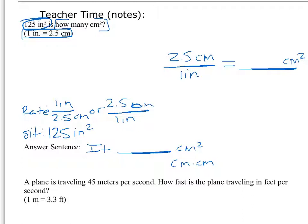I have centimeters from that rate, but I need centimeters squared. Is centimeters the same thing as centimeters squared? No — it's the same as centimeters times centimeters. So what do we need to do to make sure we have centimeters times centimeters? We multiply by itself — we put that rate in one more time. Now we can see that we have centimeters times centimeters, which gives us centimeters squared. That's what we want.